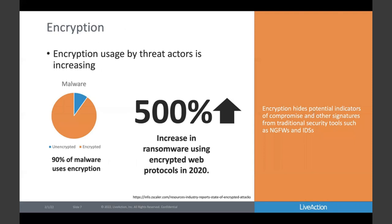Finally, encryption. While encryption doesn't blend in the same way, most network traffic is now encrypted, and malware is increasingly using encryption as well. Roughly 90% of malware uses encryption, and that number is going up. We saw a 500% increase in ransomware using encrypted web protocols in 2020. Encryption is hiding the standard indicators of compromise and other signatures previously used to detect malware families. We can still see the exchange between endpoints and the ports being used, but we have much less visibility into the inside of the traffic to detect what's happening.